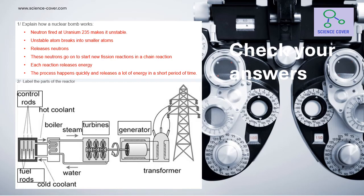Let's check our answers. Explain how a nuclear bomb works: a neutron is fired at uranium-235 making it unstable; the unstable atom breaks into smaller atoms, perhaps krypton and barium; this releases neutrons which go on to start new fission reactions in a chain reaction; each reaction releases energy, and the process happens quickly releasing lots of energy in a short period of time. For question two, the missing labels are the control rods, fuel rods, turbines — which the steam spins — and the generator which the turbines turn.